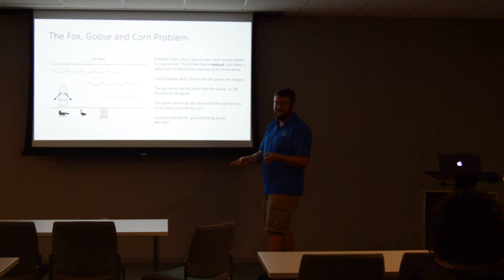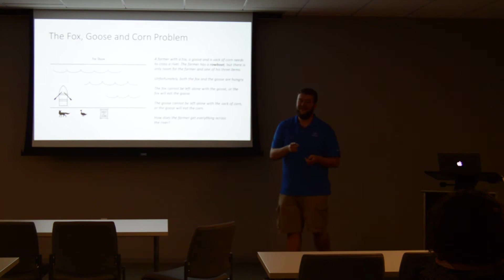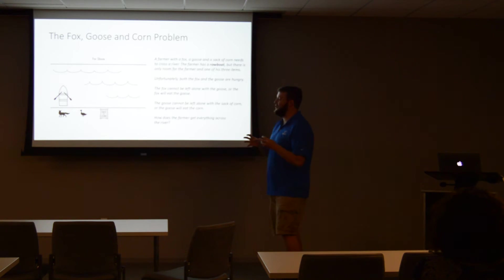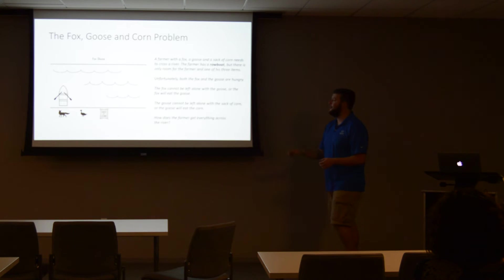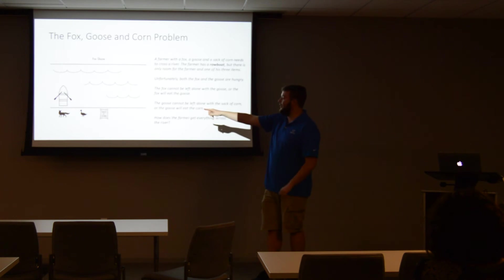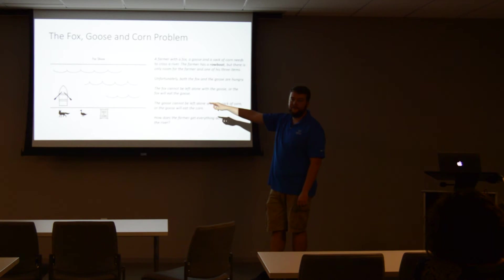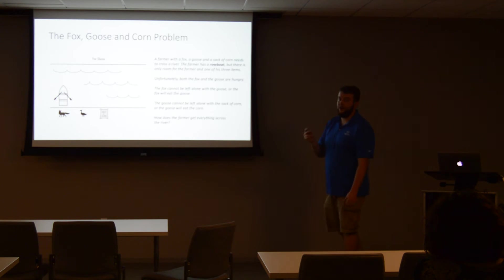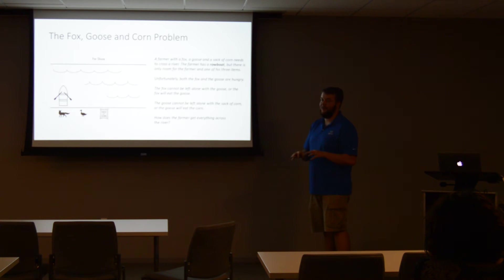Restate the problem. Let's add the constraint — let's imagine that the farmer is the driver of the boat, so he can carry someone with him. Who can go first? If you take the fox across first, the goose will eat the corn while the farmer's gone. So we can't do that. What if we take the sack of corn? The fox eats the goose. What if we take the goose across? Nothing — the fox and corn are fine together. So that's our first operation — the first line of code, as it were. We need to move the goose over first.